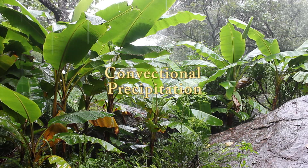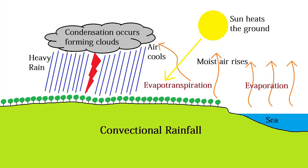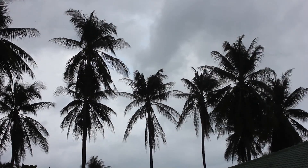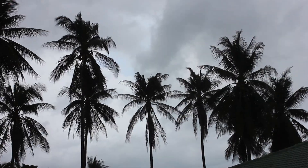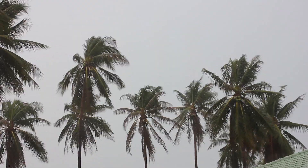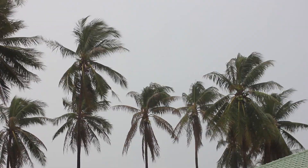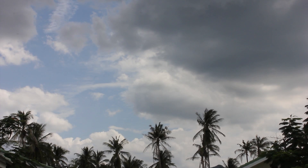Convectional precipitation is common in tropical regions. It is caused when the intense sun hits the ground, causing warm air to rise. The air cools as it rises, causing water vapour to condense into clouds, which eventually leads to precipitation. These storms are often heavy, but are over relatively quickly.